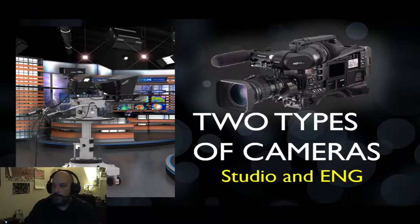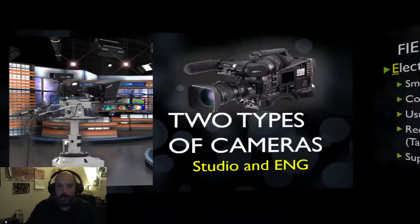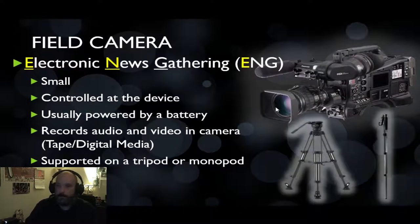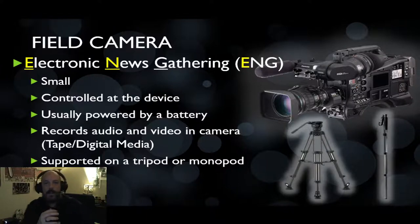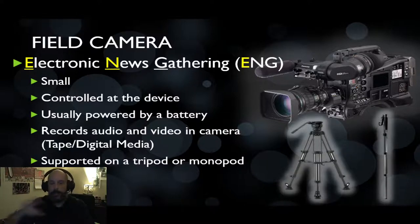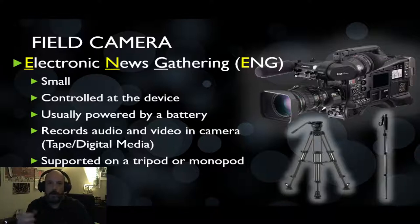The first is going to be a studio camera, which is this big camera here. The second is going to be a smaller camera called an ENG, or electronic news gathering. With the field camera or the ENG, the really nice thing about them is that they're going to be relatively small in size, so you can just hold them in the palm of your hand. You can also control all the settings — recording, zoom, focus — at the camera, so you don't have to go to another location to remotely do that. They're powered by a battery, which means there's no power cord going from a wall or another power supply.